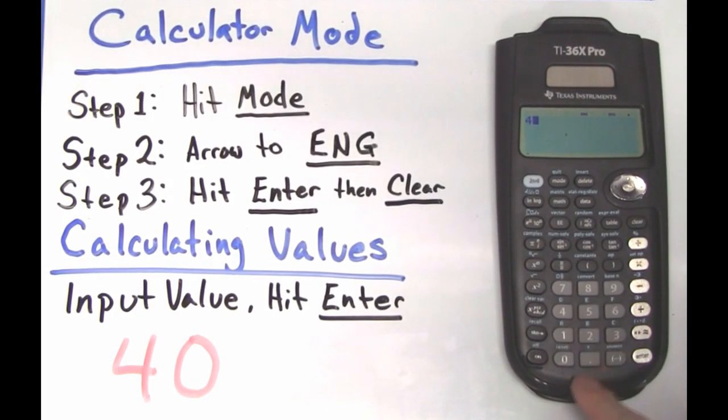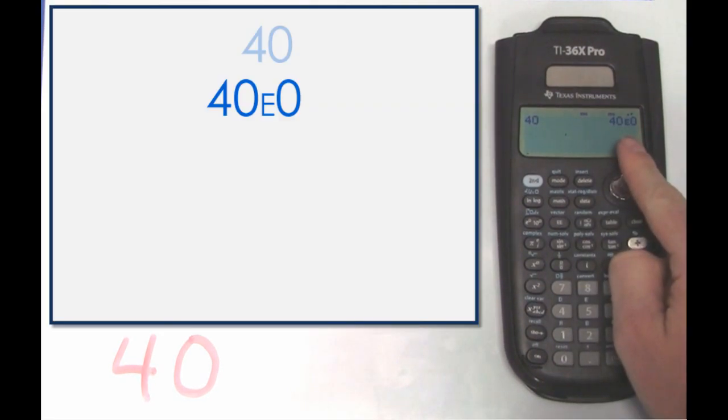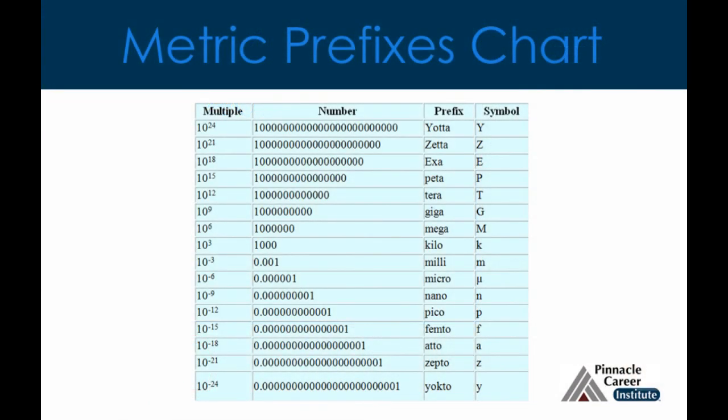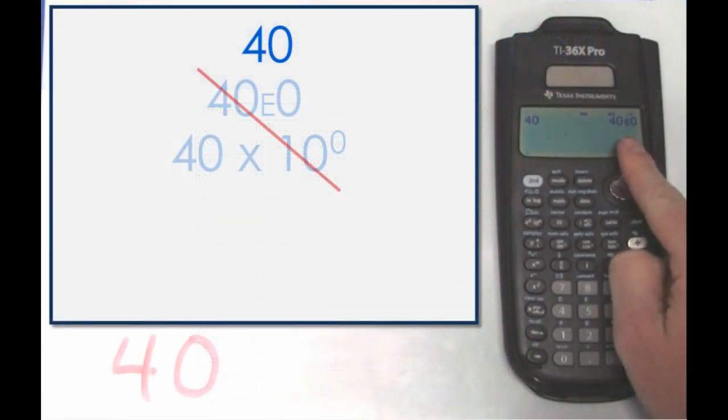This next example of 40 will teach us something new about engineering notation. Our answer comes up 40e0. Let's go ahead and look at our metric prefixes chart again. You can see that there is no 10 to the zero power prefixes. That's because 40 is already simplified. So there's no need to calculate.